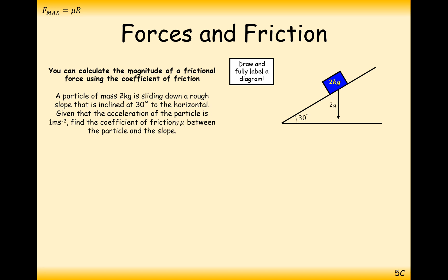The question asks us to, given that the acceleration is 1m per second squared down the slope, find the coefficient of friction between the particle and the slope. In this case then, let's draw our diagram. We're going to need this R force here because that gets involved with the friction force. It's sliding down the slope, so friction must then act up the slope.